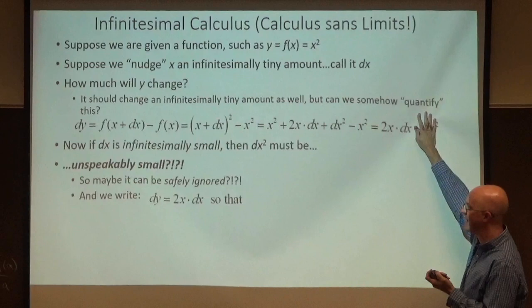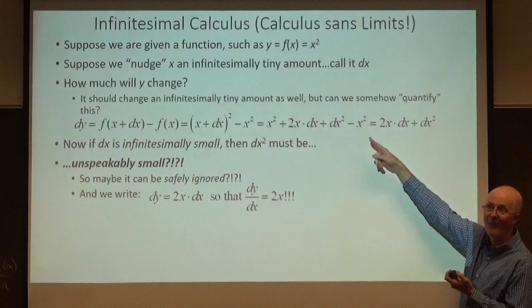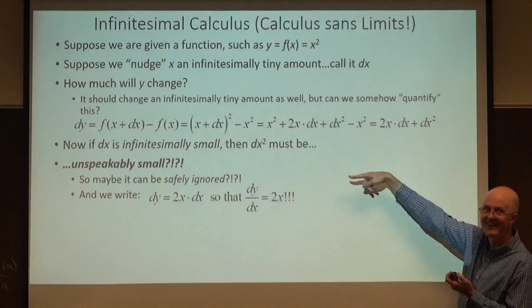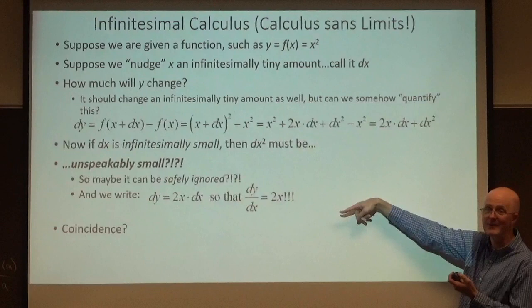And we write dy equals 2x dx. We ignore the dx squared term. Hmm. Dy equals 2x times dx. Divide both sides by dx. Dy/dx is 2x. Hey, that's the derivative of x squared. Cool. Power rule. But I didn't use the power rule here. I derived it. Informally. Is that a coincidence? Will we always get the derivative?